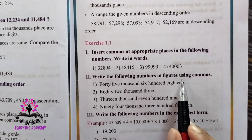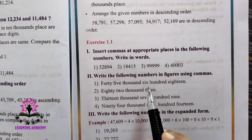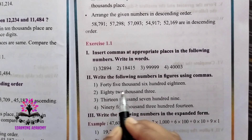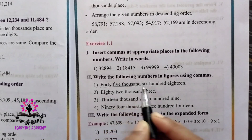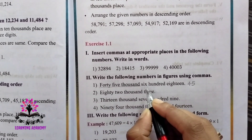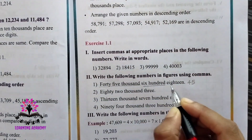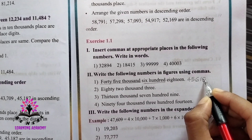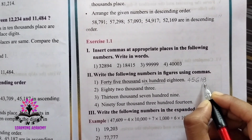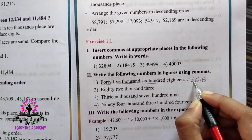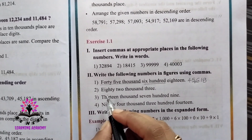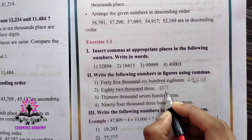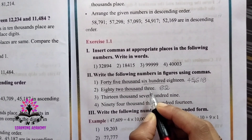Now, write the following numbers in figures using commas. They have given the numbers in words and you have to write in the form of digits. First: forty-five thousand six hundred and eighteen — 45,618. Second: eighty-two thousand three.